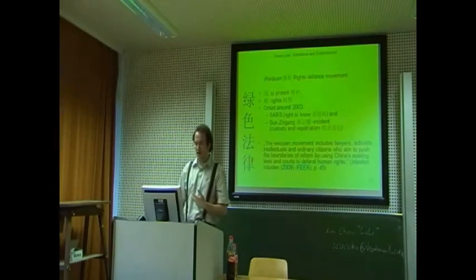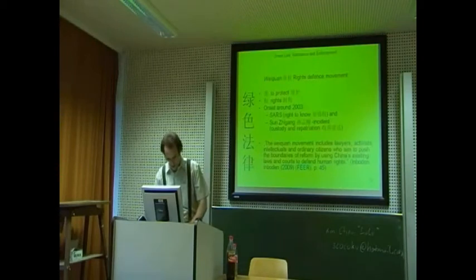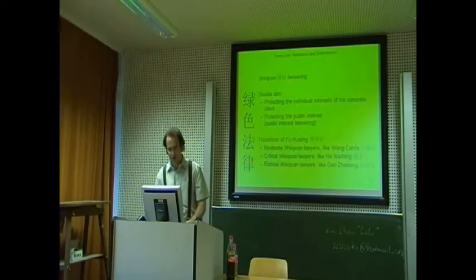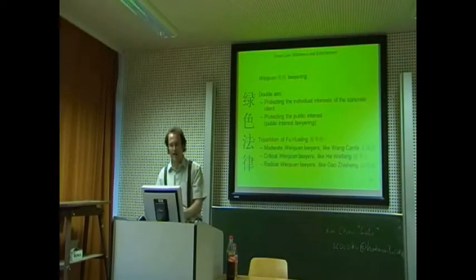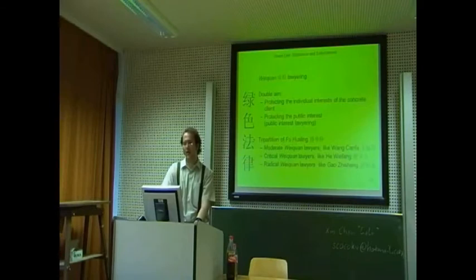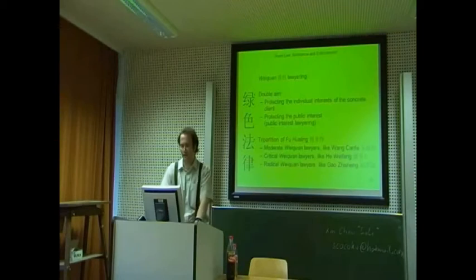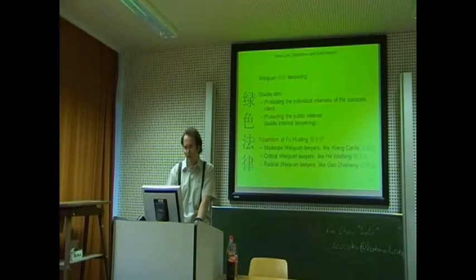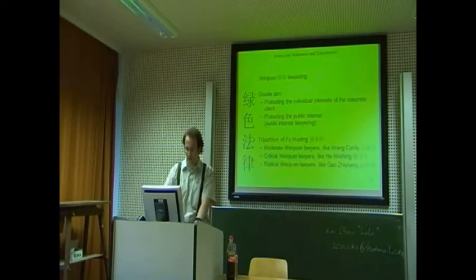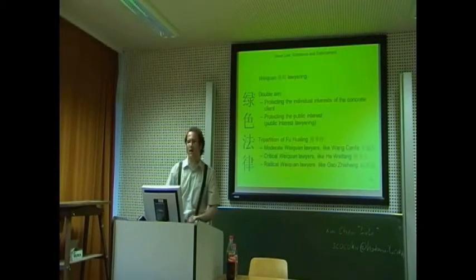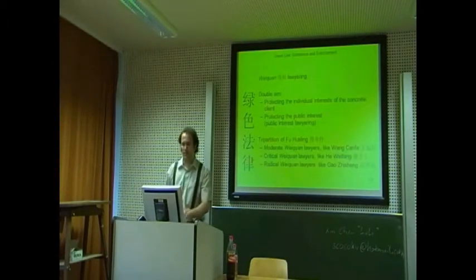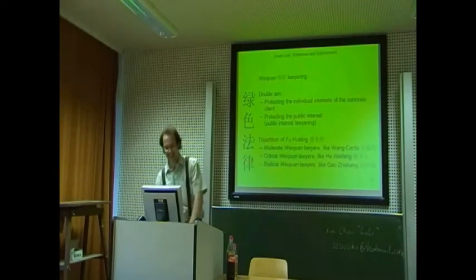And right now just a short slide about the lawyering aspect of this weiquan movement. These lawyers generally have a double aim: they on the one side want to protect the individual interests of the concrete clients, but also protect the public interest. This is called public interest lawyering. A categorization you will also find quite often is the tripartition between moderate weiquan lawyers, critical weiquan lawyers, and radical weiquan lawyers. I cannot go more into detail here. This is actually the topic of my MA thesis, and if you want more, you can in around half a year read my MA thesis.